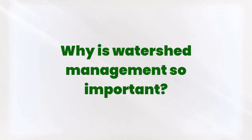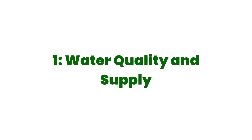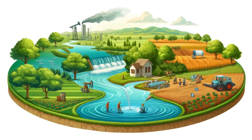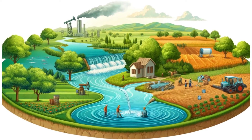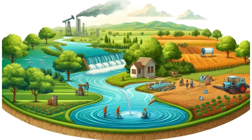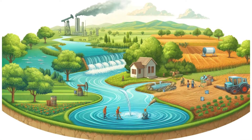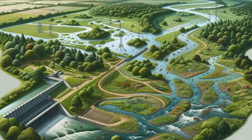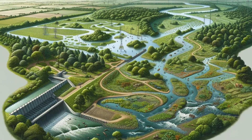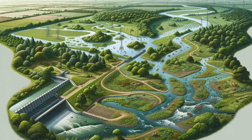Now, let's talk about why watershed management is so important. Water quality and supply — proper watershed management ensures a reliable supply of clean water for drinking, agriculture, and industry. Flood control — by managing the watershed, we can reduce the risk of floods and their devastating impacts.